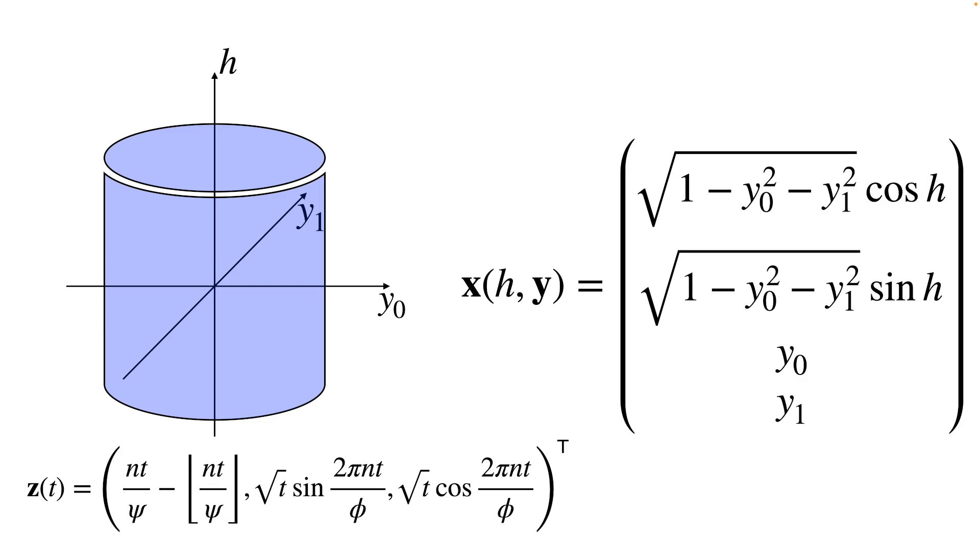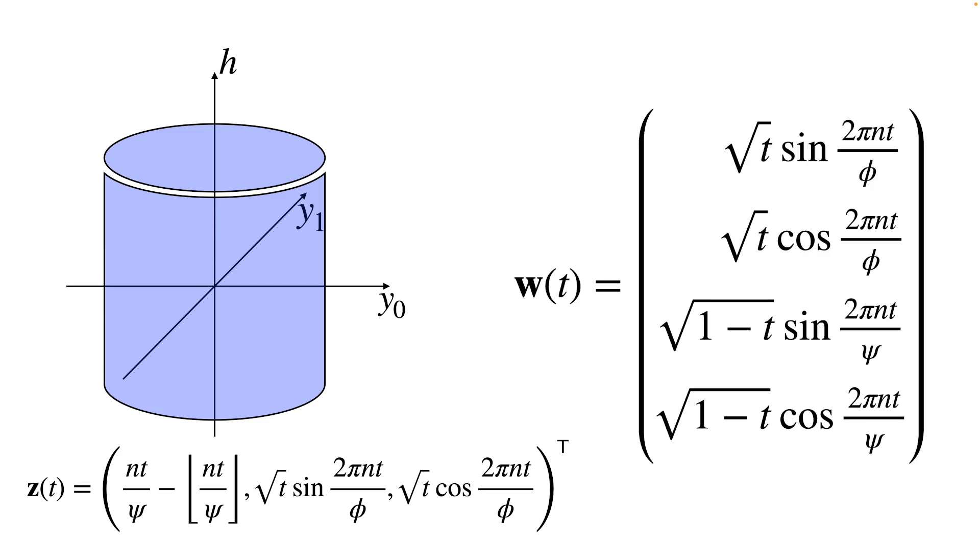Plugging the spiral in the cylinder into the mapping to the 3-sphere yields a spiral on the sphere, nicely exhibiting the expected symmetry.